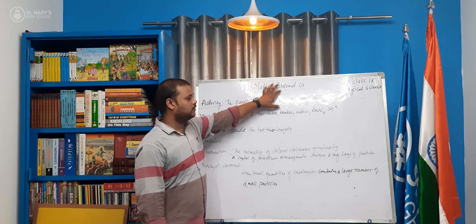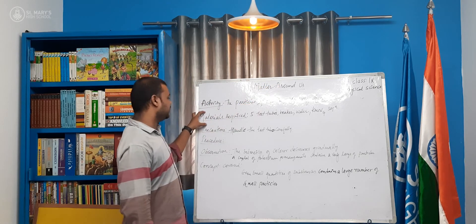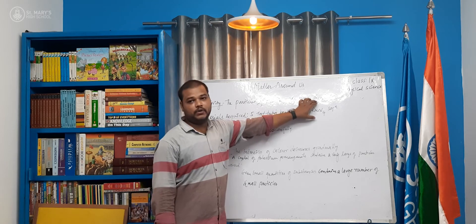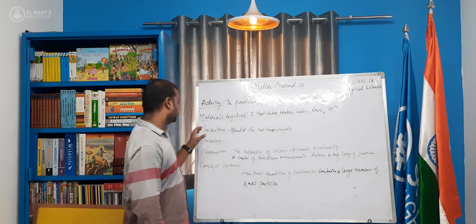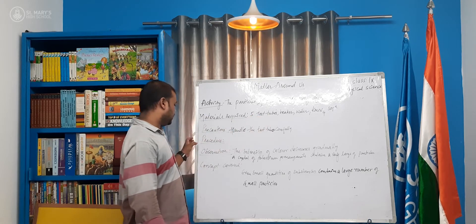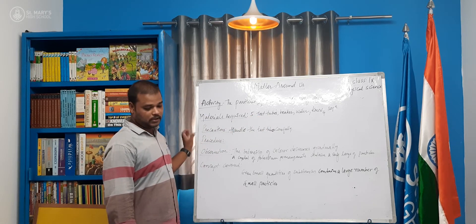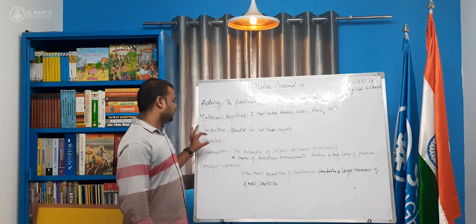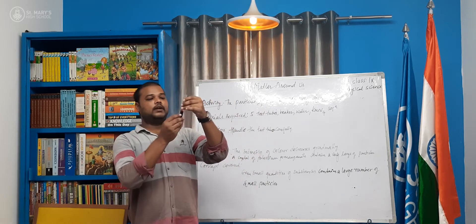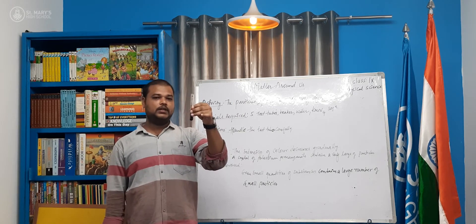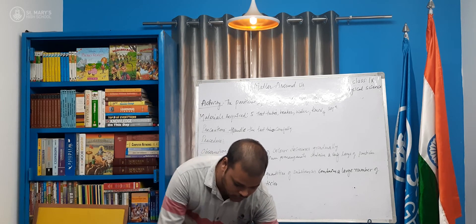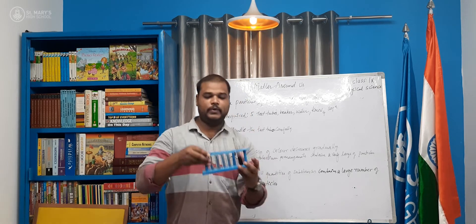The particles of matter are very small. For this activity, we need the materials: four test tubes, a beaker, water, and potassium permanganate solution. The precaution is to handle the test tubes carefully. For the procedure, take a potassium permanganate solution in a test tube — I took nearly 5 ml of potassium permanganate in a test tube. Then I took 4 test tubes, half filled with water.